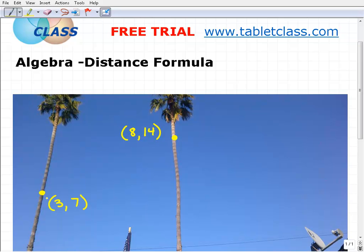So let's say these two points—we have two points here on these palm trees and the respective points are located at the coordinate (3, 7), the XY coordinate or ordered pair (3, 7), and (8, 14).